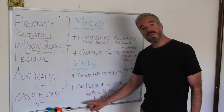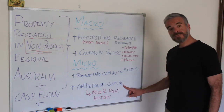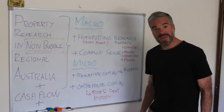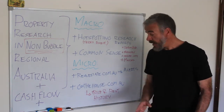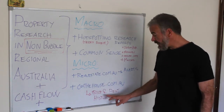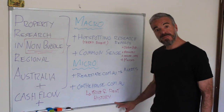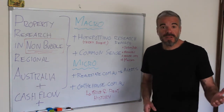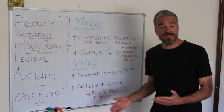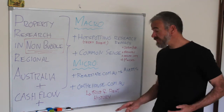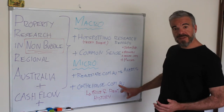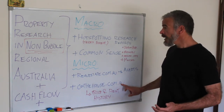Another one I really like using is onthehouse.com.au — no affiliation whatsoever. Here you have price and rent history. The last couple of purchases I've done, I could see what the previous owner had paid for the property a couple of years back, the rental history, whether there was a tenant in place, and how much they were renting for. Even though you can ask agents, sometimes the information isn't accurate — here, 99% of the properties you're looking at will be registered.